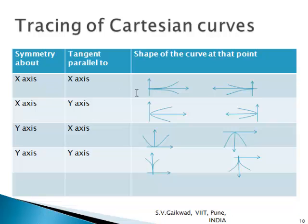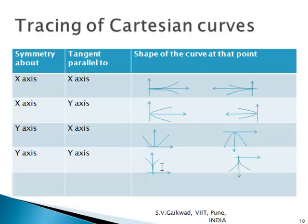Even after finding all the properties, you may not be able to visualize the curve, so this reference table helps. If symmetry is about the x-axis and tangents are parallel to the x-axis, the shape at that point is a cusp. If symmetry is about the x-axis and tangents are parallel to the y-axis, the shape is parabolic. If symmetry is about the y-axis with tangents parallel to the x-axis, it is parabolic upwards or downwards; if parallel to the y-axis, it is a cusp.